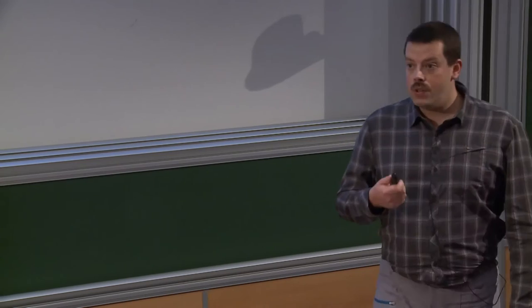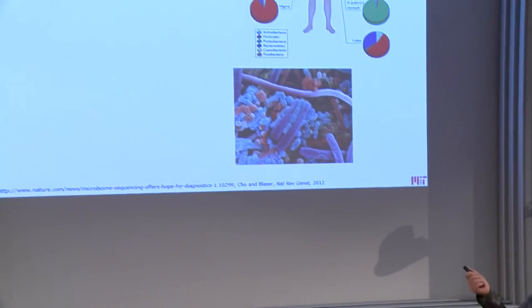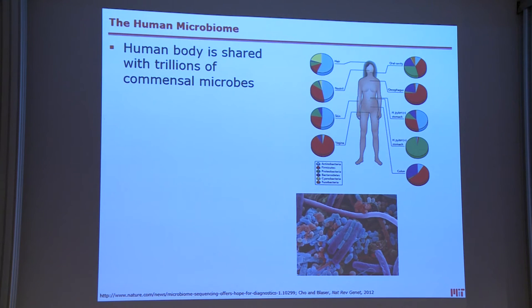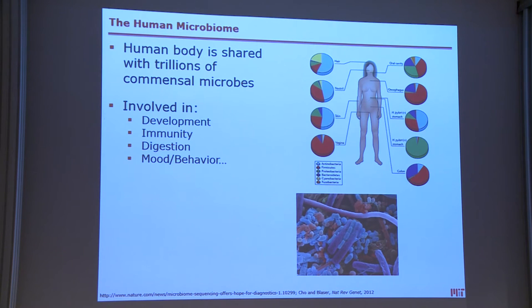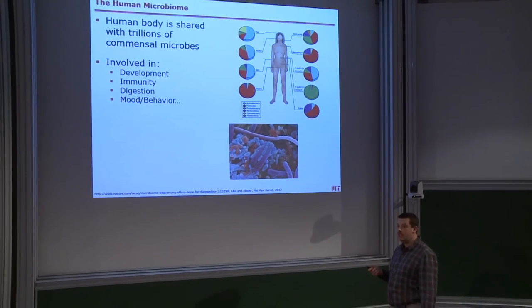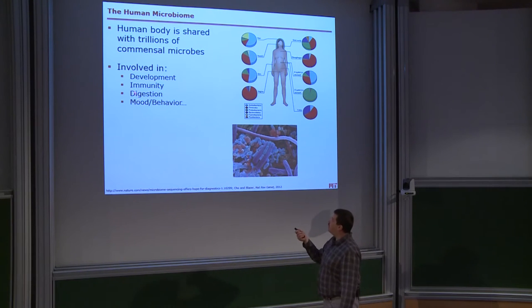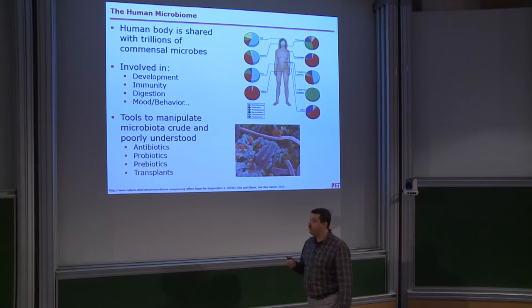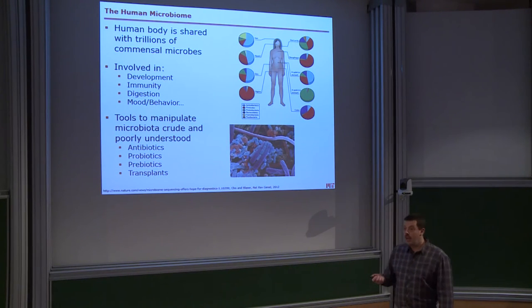The human body is not just eukaryotic cells — it's also a very large amount of microbes, trillions of commensal microbes, and a very diverse type of microbes. The gut microbiome is completely different from the skin microbiome, which is itself completely different from the head microbiome. The gut microbiome is heavily involved in many different aspects of health, ranging from development to immunity, digestion, mood, behavior, and so many other things still to be discovered. Unfortunately, the tools to manipulate it are extremely limited.